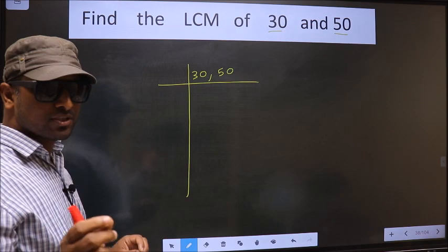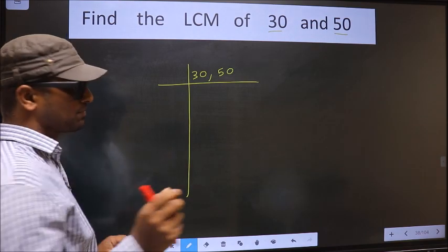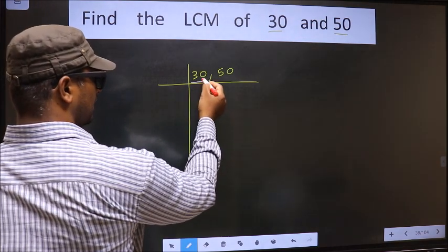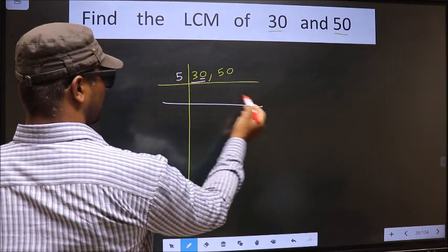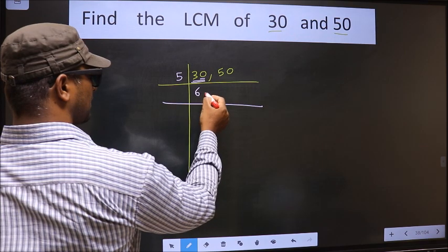Now we should focus on the first number, that is 30. Here last digit is 0, so we take 5 here. When do we get 30 in 5 table? 5, 6, 30.